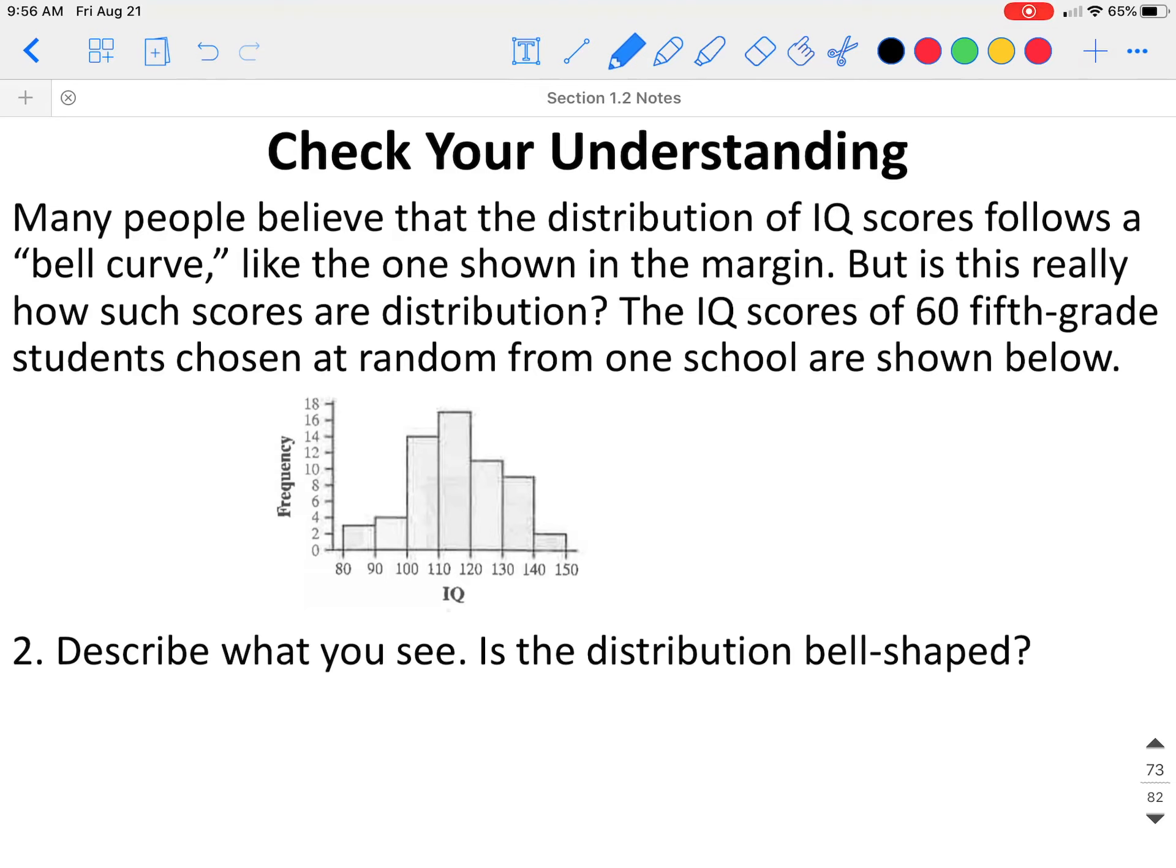Describe what you see. Is the distribution bell-shaped? If we look at this distribution, it is roughly symmetric or what we call bell-shaped. The median IQ appears to be between 110 and 120. So it appears to be in this bar somewhere. We know that the IQs vary from 80 all the way up to 150. And there do not appear to be any outliers.